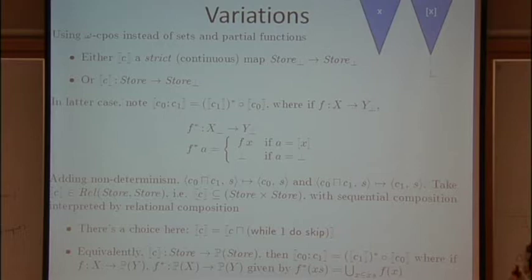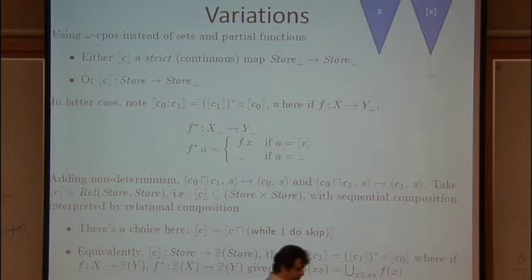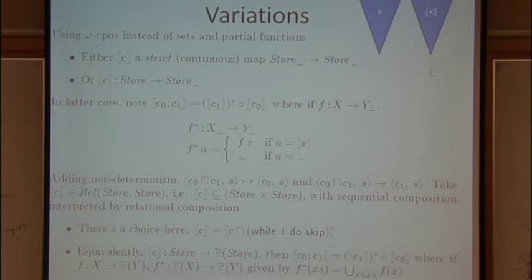Okay, so that was a deterministic language. We were able to model our commands as functions because for every input state there's a unique output state that you get. If we had a non-deterministic language so we added a non-deterministic choice operator here, the operational semantics of this is very easy to give. So C0 choose C1 in a state S can take a one-step transition to just C0 in state S or a one-step transition to C1 in state S.